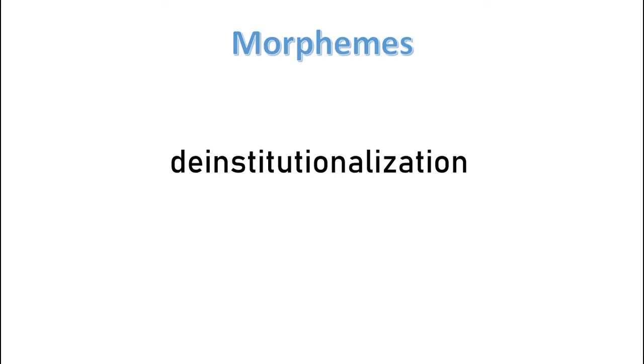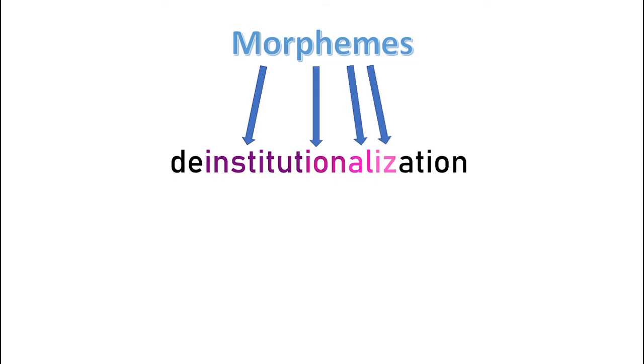Other notably long words, such as deinstitutionalization, do not pose the same difficulties at all, since we are more familiar with the parts or morphemes that make it up: institute, institution, institutional, institutionalize, deinstitutionalize, deinstitutionalization.